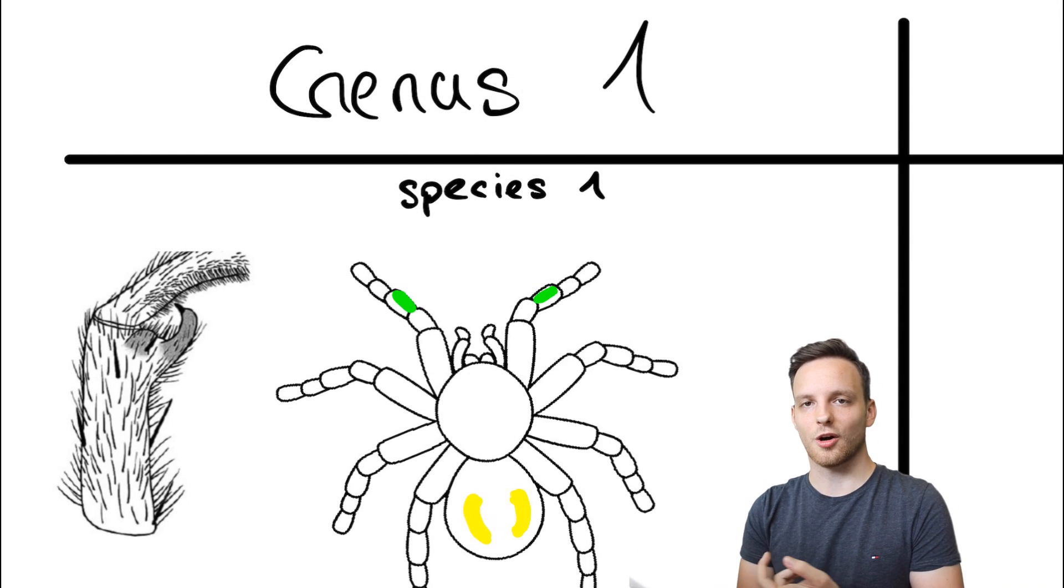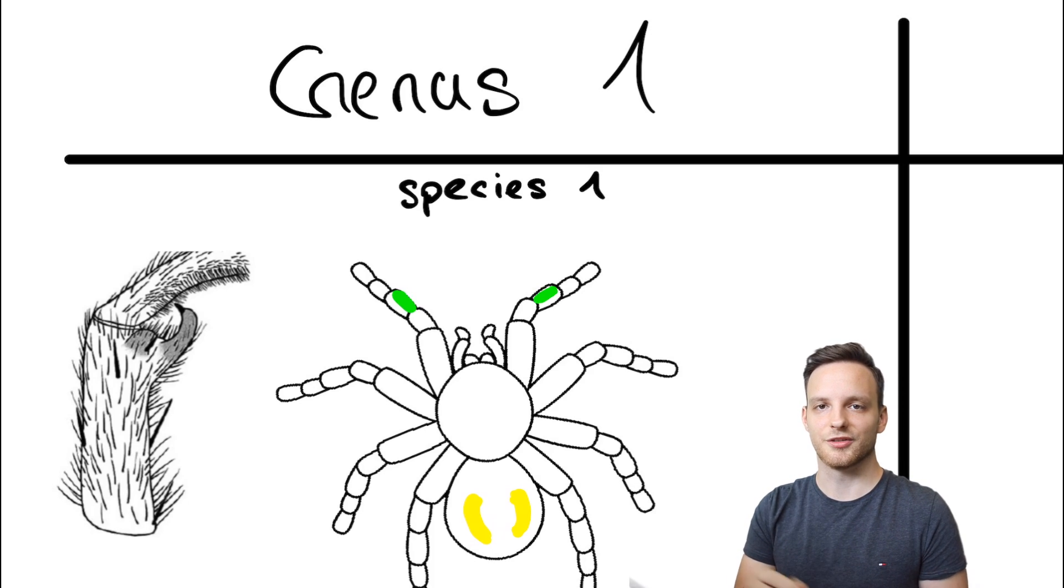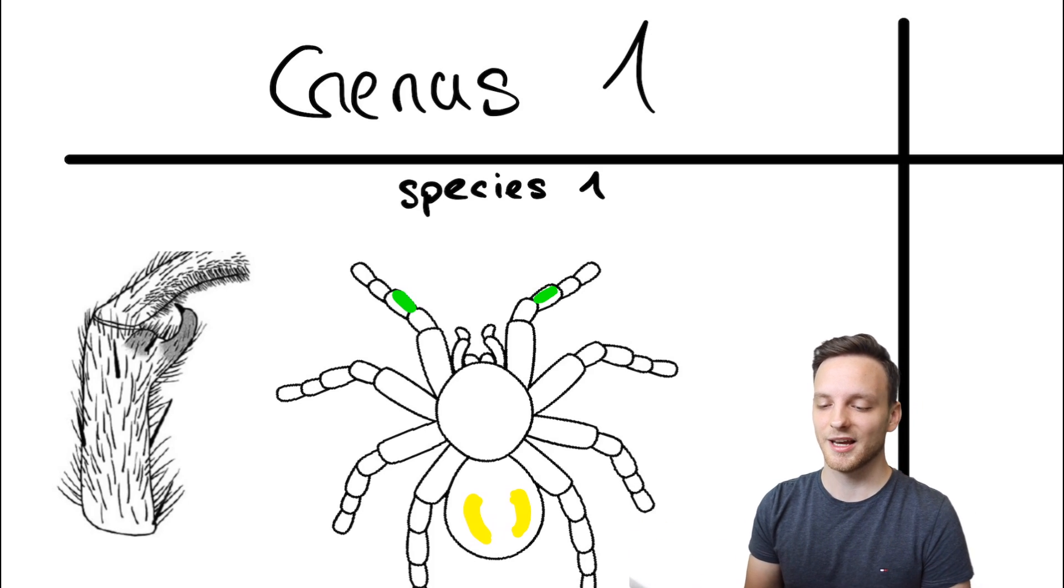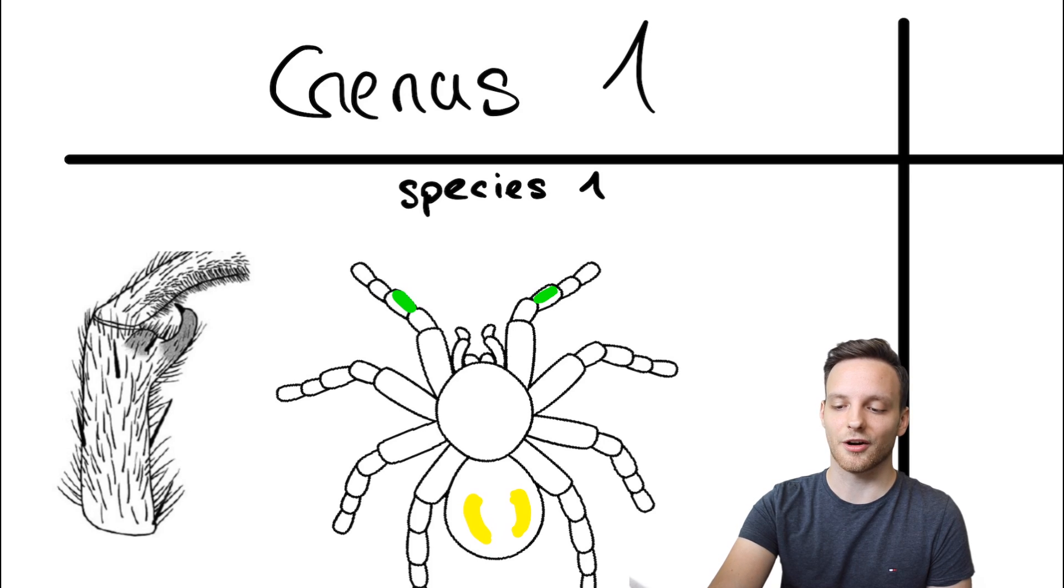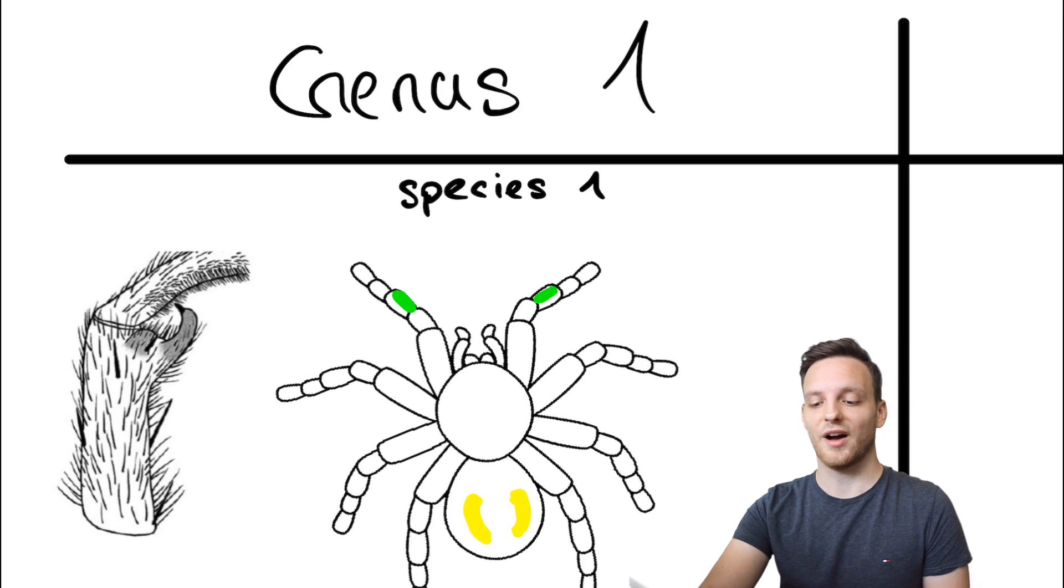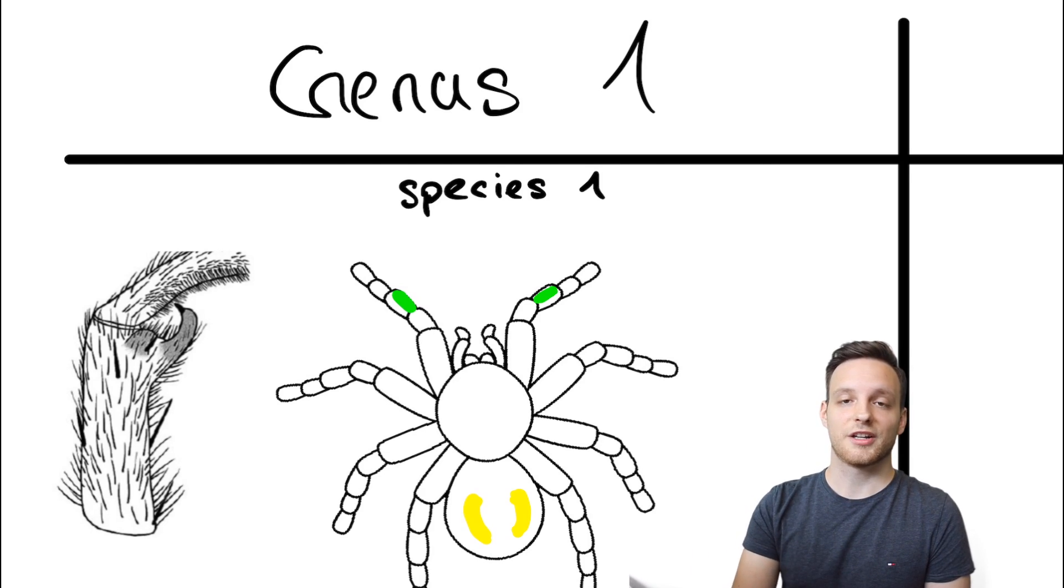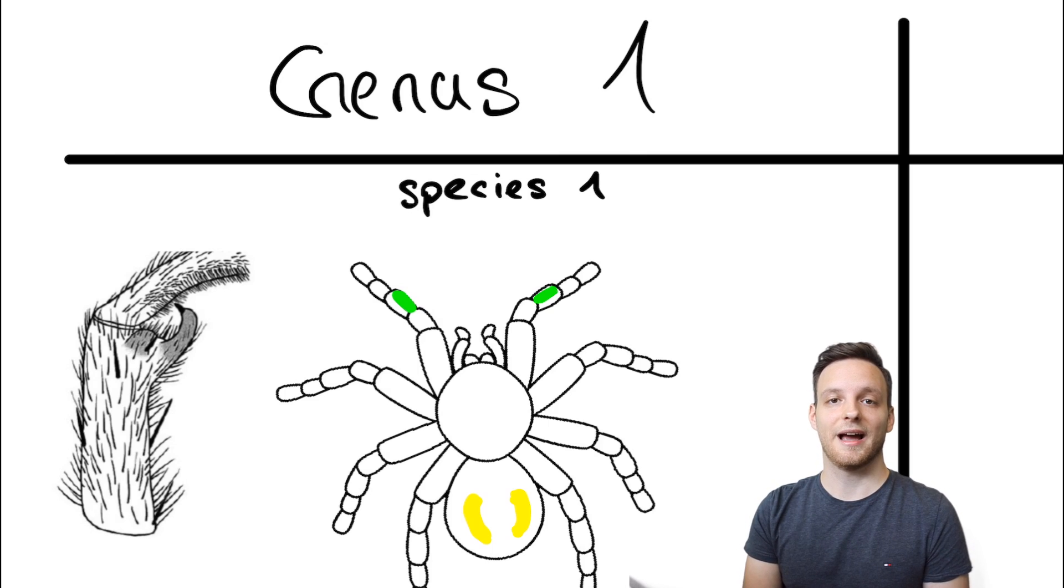You're going to see a short example I tried to illustrate and draw, so my drawing skills are not the best. But this is genus one and species number one. I would like to showcase how the different species are changing. Genus one is defined with this yellow marked part on the abdomen of the spider. That illustrates the fact that this genus has two separate urticating hair patches.